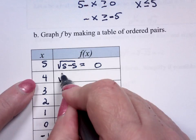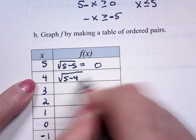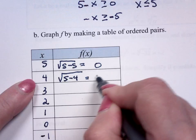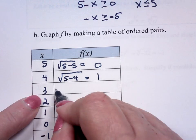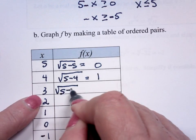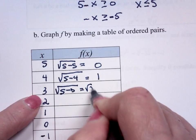This is the square root of 5 minus 4. That's the square root of 1. This is the square root of 5 minus 3. That's the square root of 2.